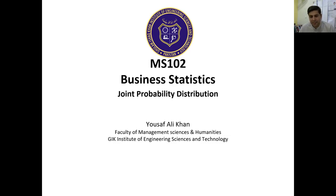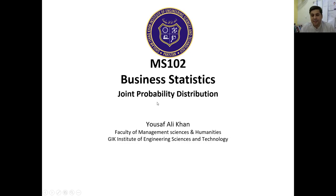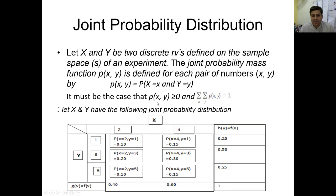Joint probability distribution means there will now be two types of random variables. Before, we only considered one type of variable — for example, x as a random variable when we throw a coin or a die, where x represents the number of heads or the number of events. Now we will consider two types of random variables simultaneously, and that is why it is called joint probability distribution — there will be a combination, a joint probability distribution.